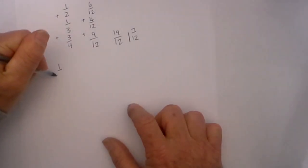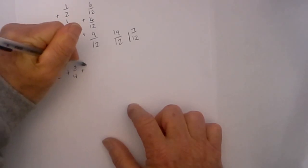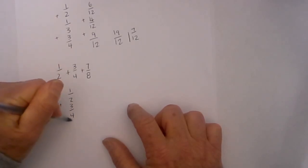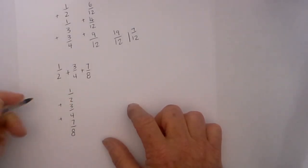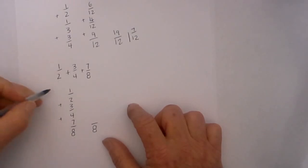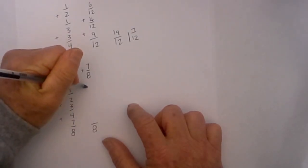Say we have one half plus three fourths plus seven eighths. I line them up in a vertical column. And then I start thinking about a common denominator: four, two, four, and eight. That's pretty easy. Eight is the common denominator, so two goes into eight four times, so we have four eighths.